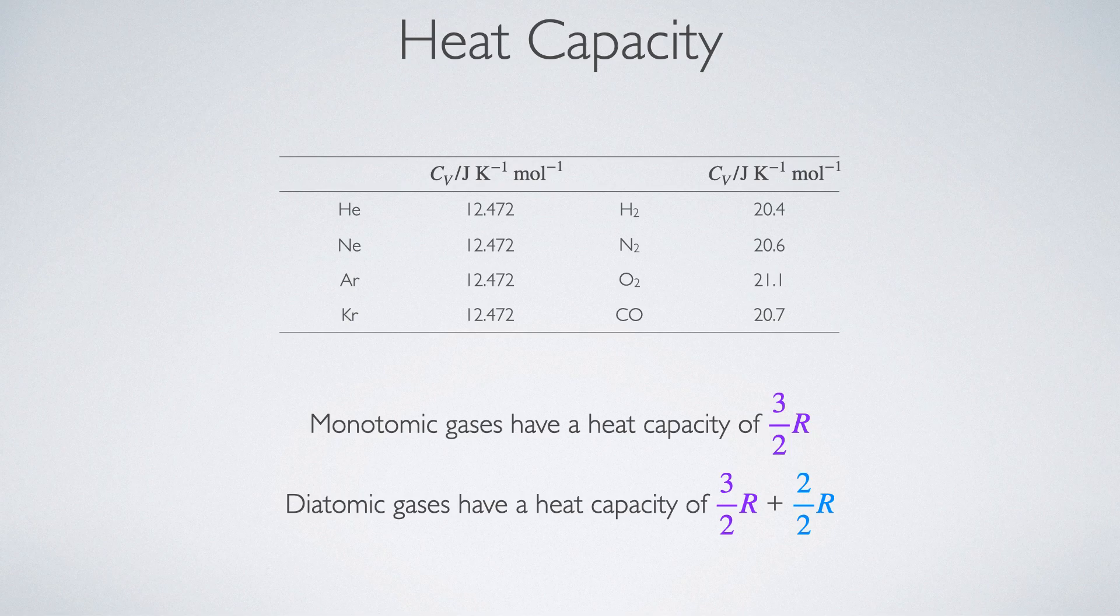So here I just have some values of the heat capacity of some monatomic and diatomic gases. I can see that for my monatomic noble gases, my heat capacity at constant volume is identical for all of them, 12.472 joules per Kelvin per mole. It's not quite so perfect for my diatomic gases. If I actually work out five halves R, it's 20.78, 79 joules per Kelvin per mole. And my values aren't quite this. And so what is going on? Why that very subtle difference between my heat capacity predictions from equipartition theory and what's actually going on.